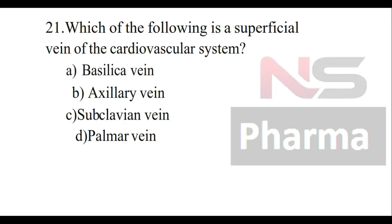Question number twenty-one: Which of the following is a superficial vein of the cardiovascular system? Option A: Basilic vein, Option B: Axillary vein, Option C: Subclavian vein, Option D: Palmar vein.